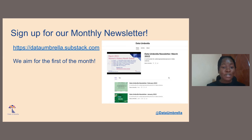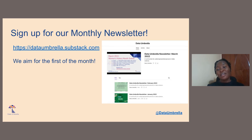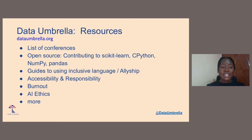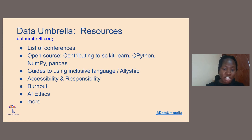We also welcome suggestions on how we can improve our newsletter, or any worthy information or job opportunities you have or would like to share with our members. We also have resources on our website at dataumbrella.org. Our resources include a list of conferences, open source guidelines, inclusive language and allyship, burnout, AI ethics, and more.